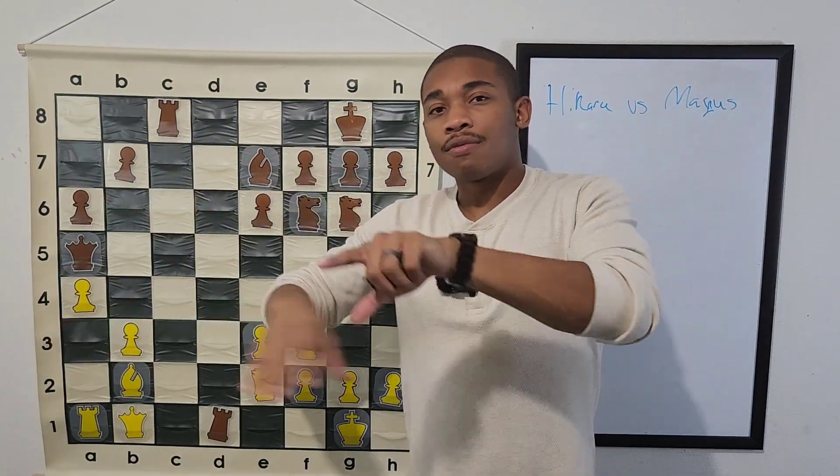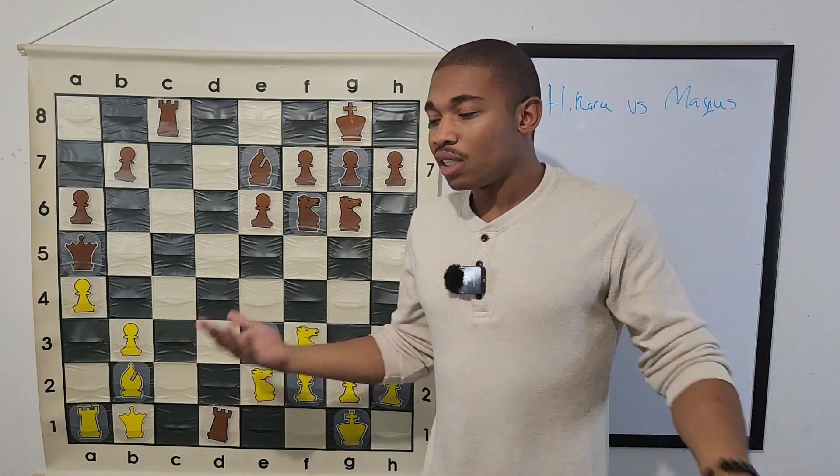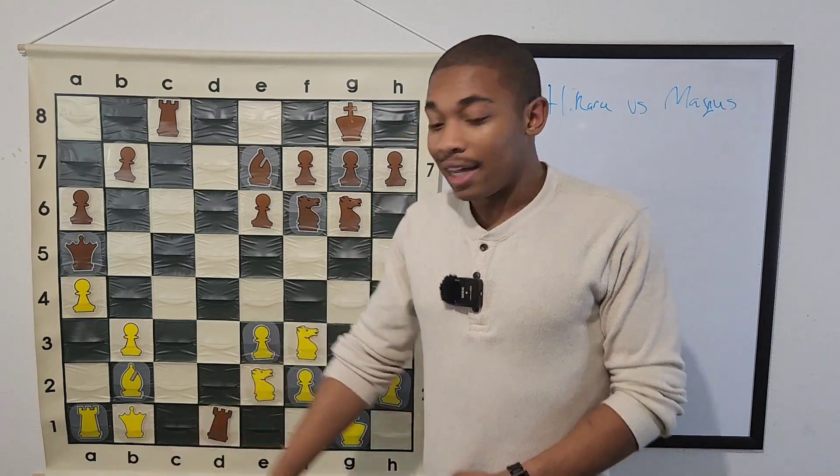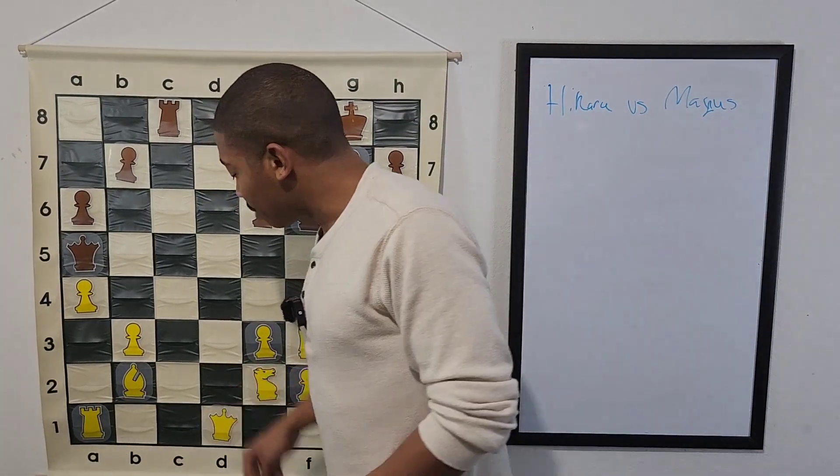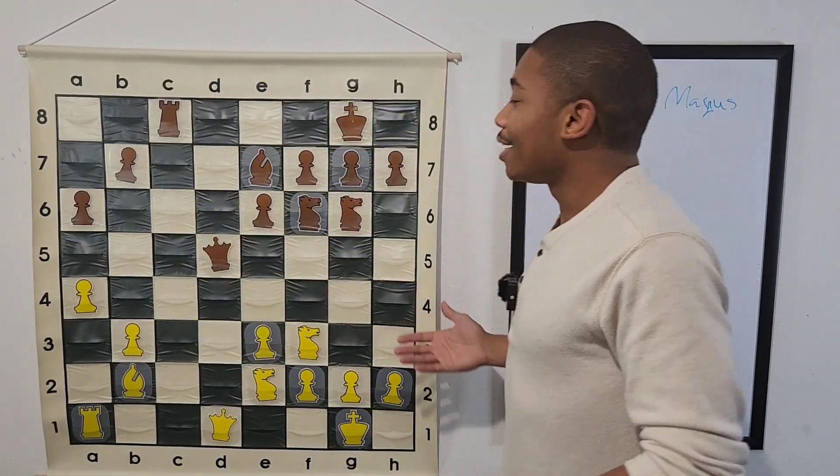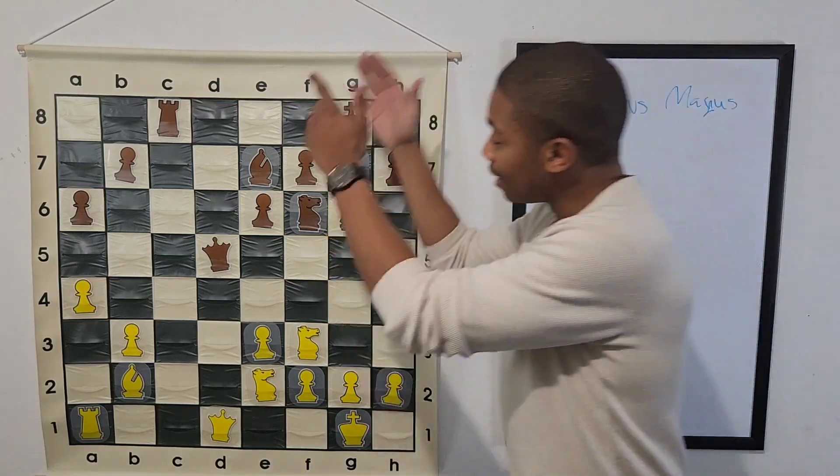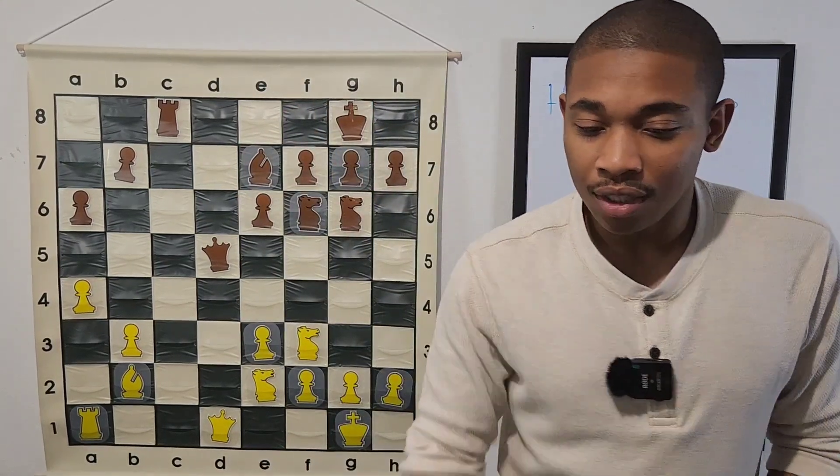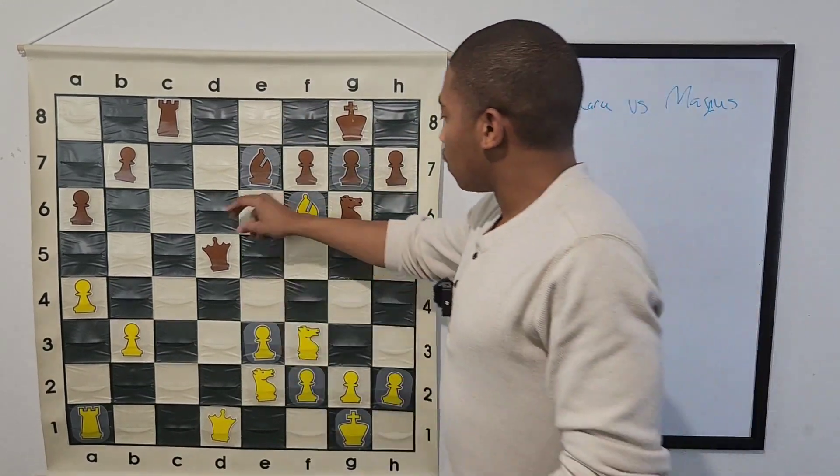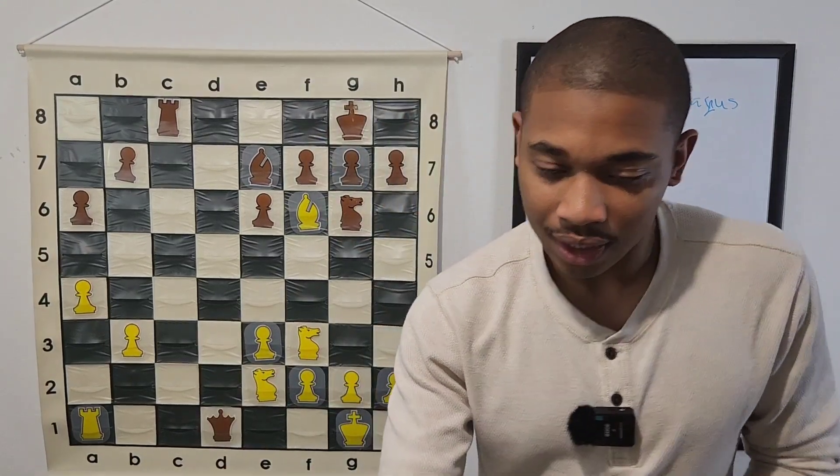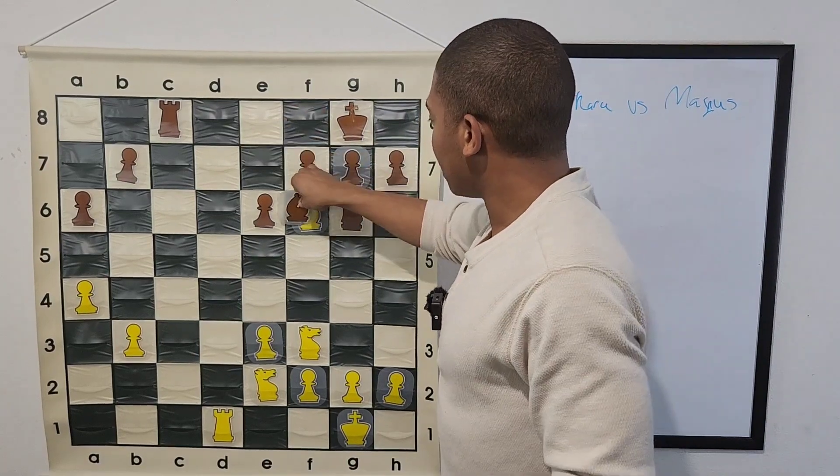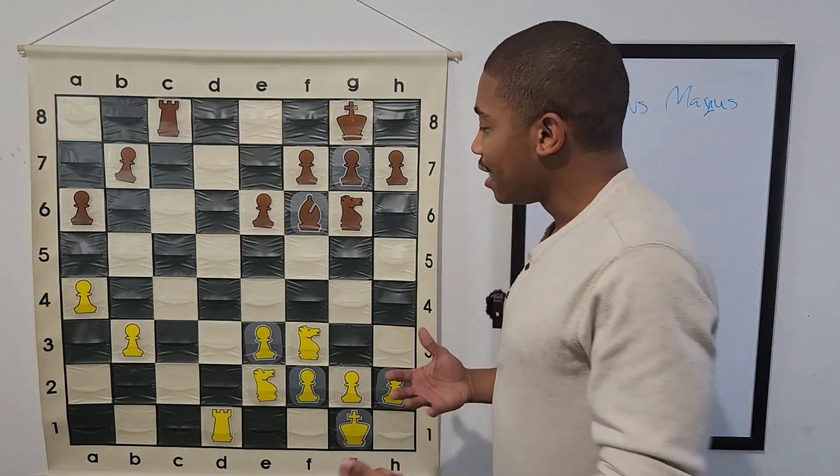What happened was Hikaru Nakamura was like, who cares about your yacht? I'm going to take your Rook back, and I'm going to try to win this game. And then Magnus Carlsen was like, no, you're not. We're just going to trade Queens down the D file. So what happened was Bishop takes on F6, Queen takes on D1, and after Queen takes on D1, Rook takes on D1, Bishop takes on F6, and we are in somewhat of an endgame.